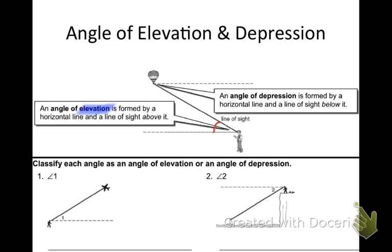The opposite of that is what's called the angle of depression. An angle of depression is formed by a horizontal line and a line of sight below it. When you see the word depression, what do you think of? Sad, low, going down, right? You're down in the dumps. Depression means you're going down, so the angle of depression is when you kind of look down.